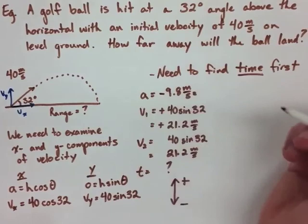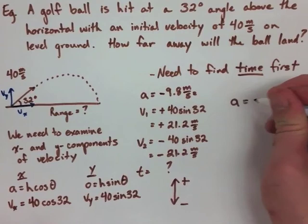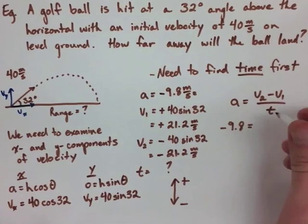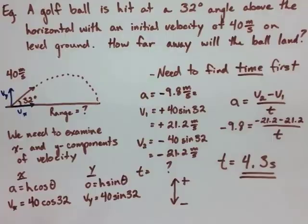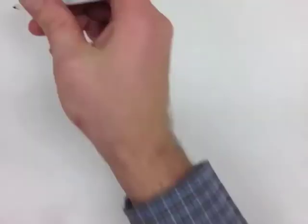Now we make our up positive and our down negative, so our acceleration is negative, our initial velocity is positive, and our final velocity becomes negative. We're going to use the formula a equals v2 minus v1 over t, sub in all of our values, and we have negative 21.2 minus 21.2 over t. When we rearrange for t, we find 4.3 seconds.